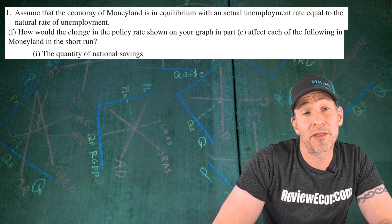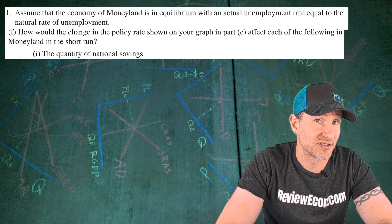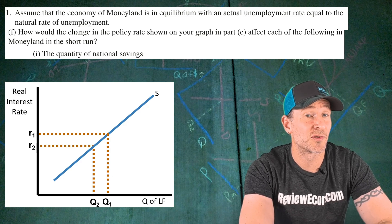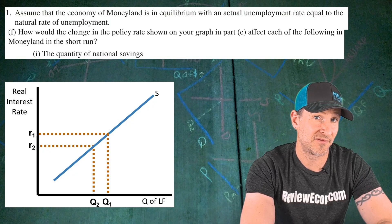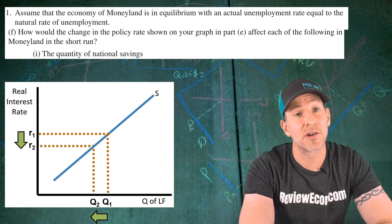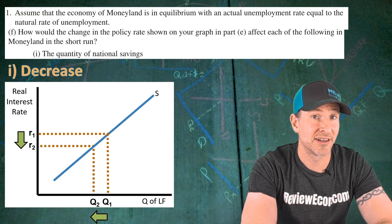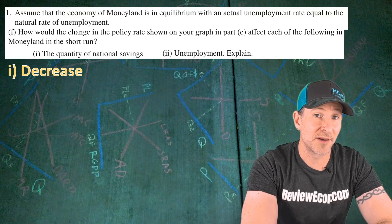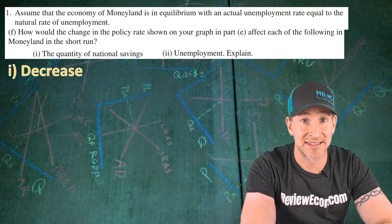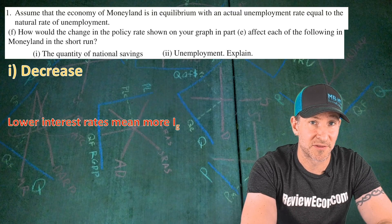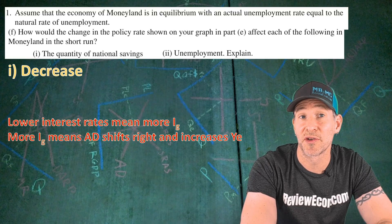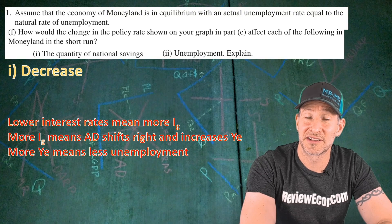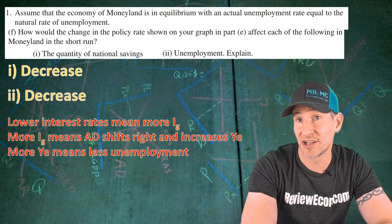For part F(i), we're asked how the policy rate change will affect the quantity of national savings in Moneyland. Looking at the savings supply in the loanable funds market, there is a direct relationship between the interest rate and the quantity of money saved. When the interest rate falls, the quantity of savings also falls — so the answer is decrease. Note: you don't earn this point until you also get the assertion point in F(ii). For F(ii), we're asked what happens to the unemployment rate. Lower interest rates mean more gross investment, which shifts aggregate demand to the right and increases equilibrium real output, which means lower unemployment — so the assertion is decrease.